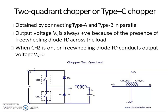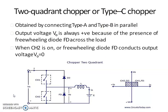Next is the operation of the two-quadrant chopper. Two-quadrant choppers are of two types: Type C chopper and Type D chopper. Type C chopper provides first and second quadrant operation, and Type D chopper provides first and fourth quadrant operation. Type C chopper is obtained by connecting Type A and Type B choppers in parallel. The output voltage V0 is always positive due to the freewheeling diode, but the current may be positive or negative.